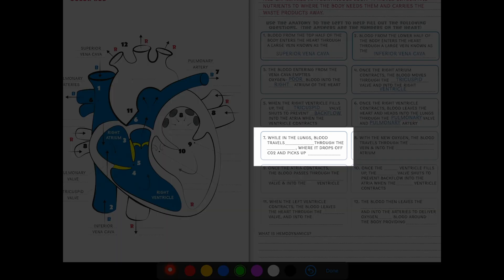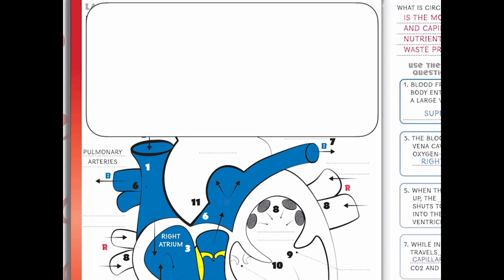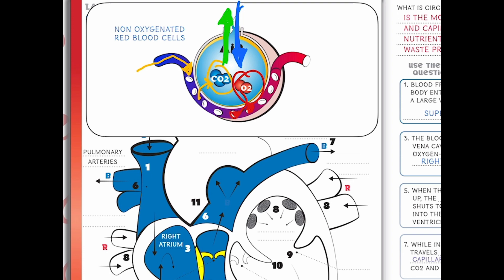Number seven: while in the lungs, blood travels single file through the capillaries, where it drops off CO2 and picks up oxygen. We have our alveoli here — non-oxygenated red blood cells that came from the heart line up single file and drop off CO2, which we expel when we breathe out. When we inhale, we breathe in fresh oxygen, and this is how our red blood cells pick up oxygen and bring it right back to the heart so it can be pumped out to the rest of the body.